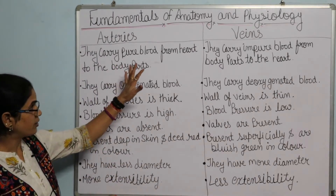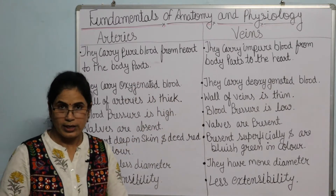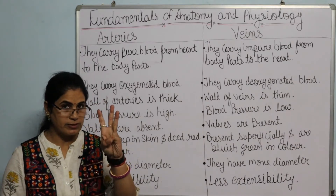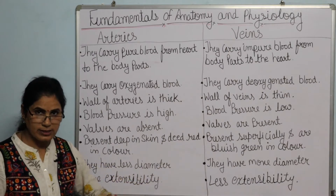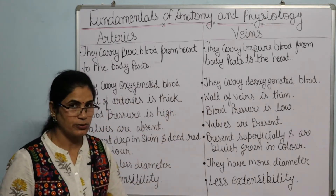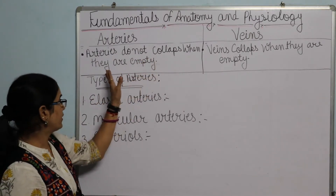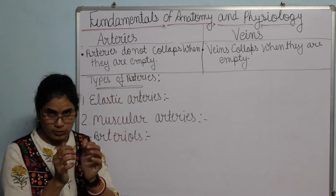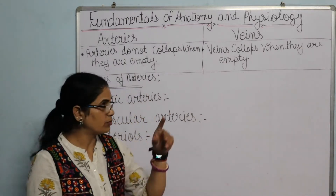We have studied arteries and veins. I have mentioned very easy points, so I think you don't have any problem. Our body has three types of blood vessels: first are arteries, second are veins — which we have already studied — and now we have blood capillaries. One last point: arteries do not collapse when they are empty — if there is no blood, they don't collapse. But veins collapse when they are empty.